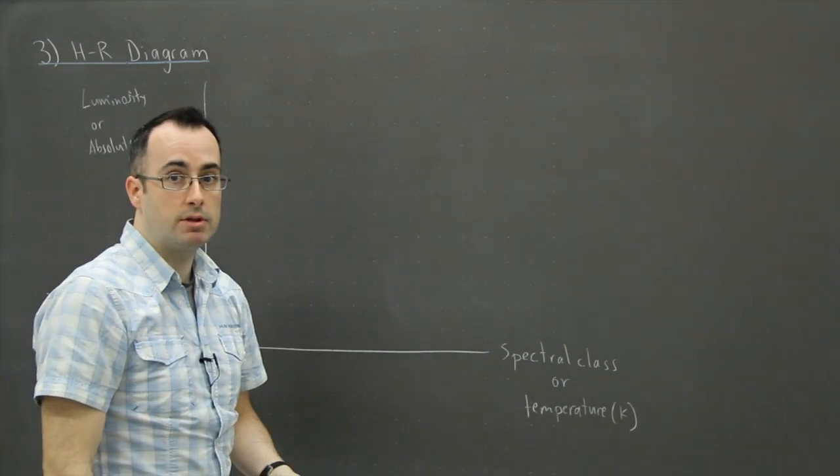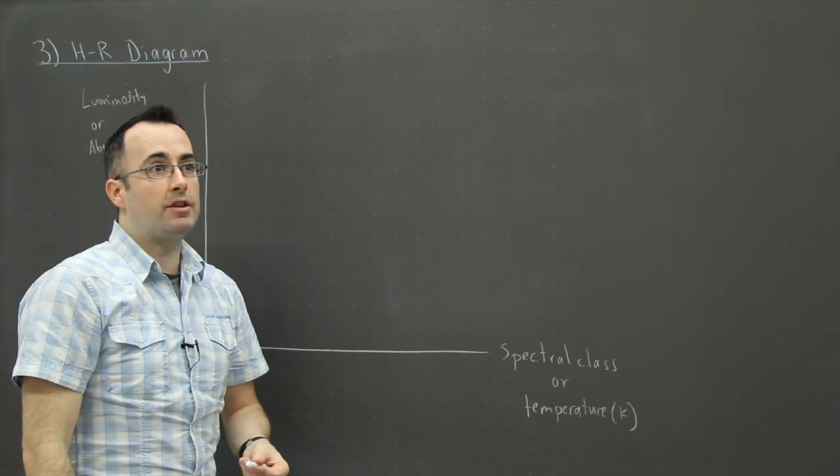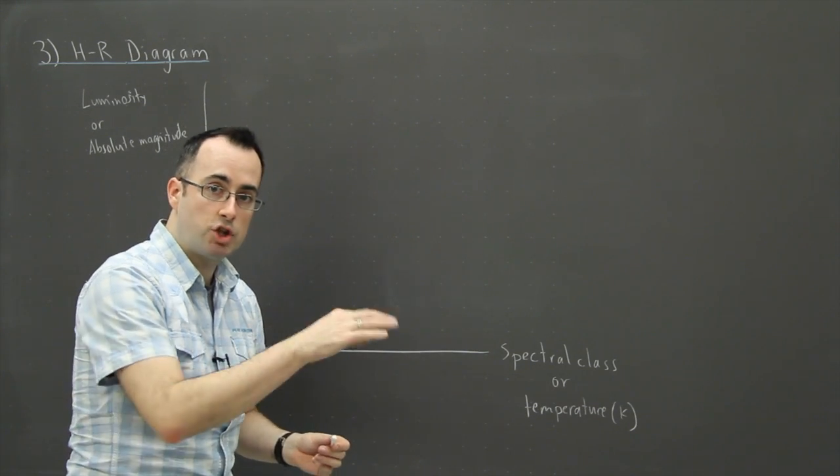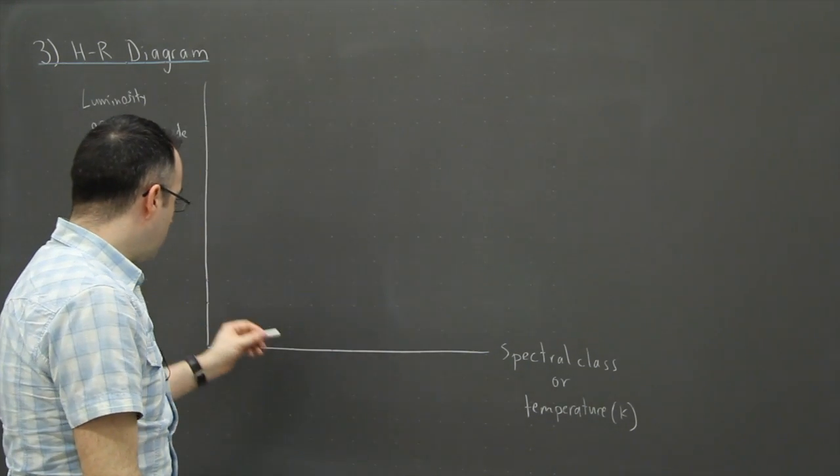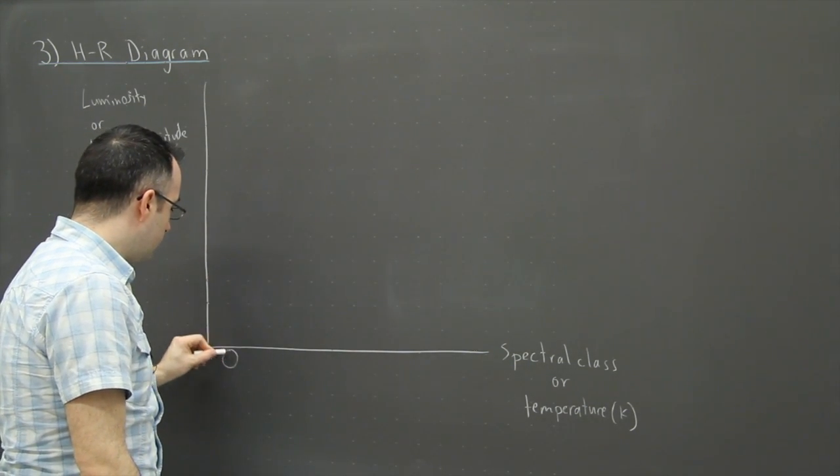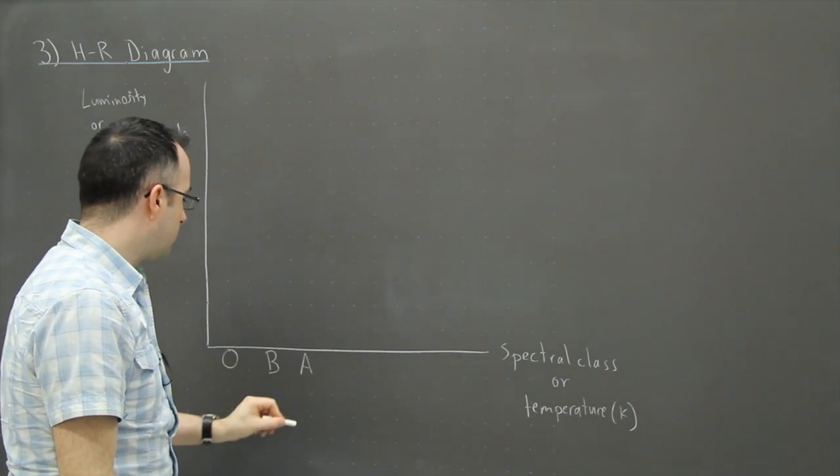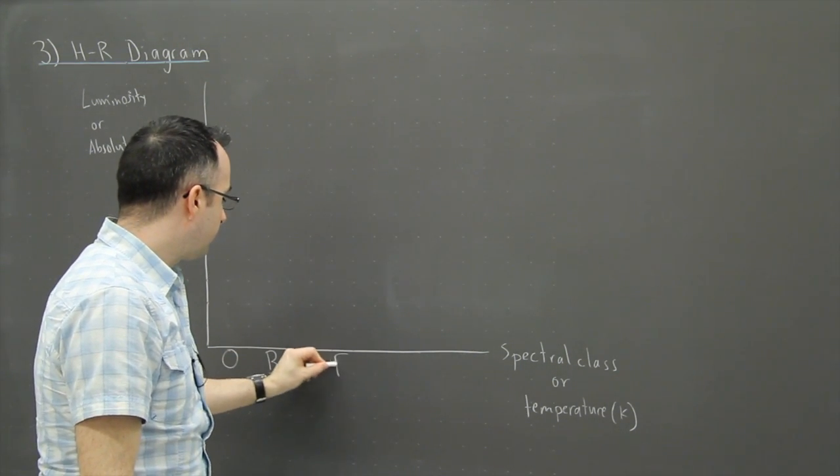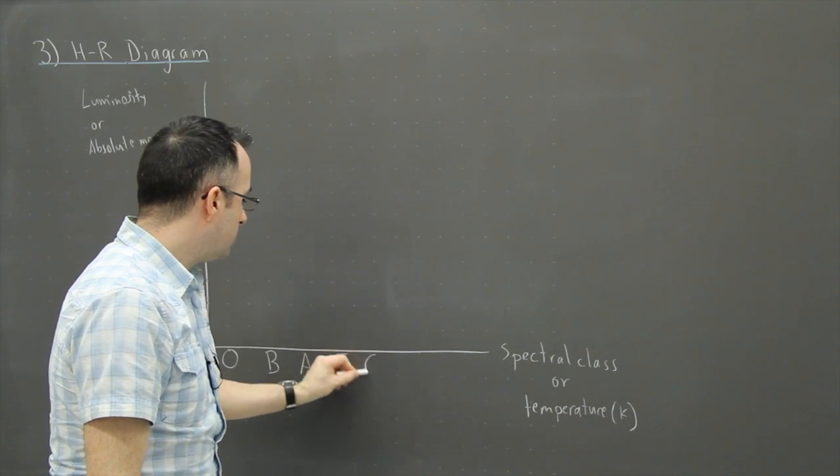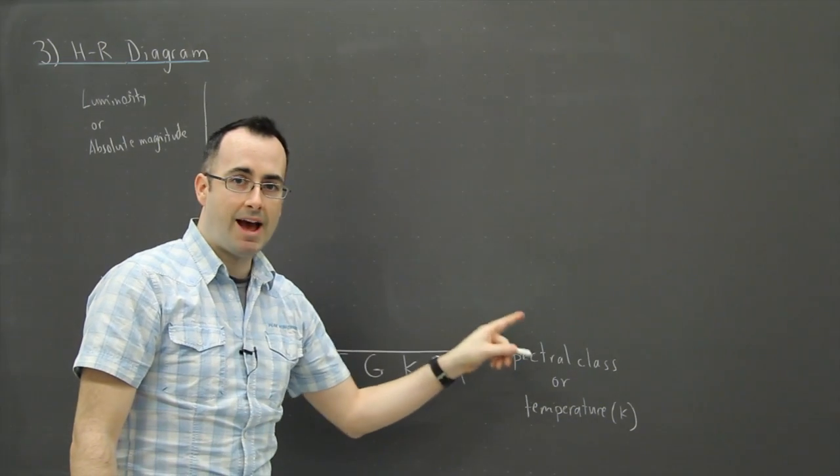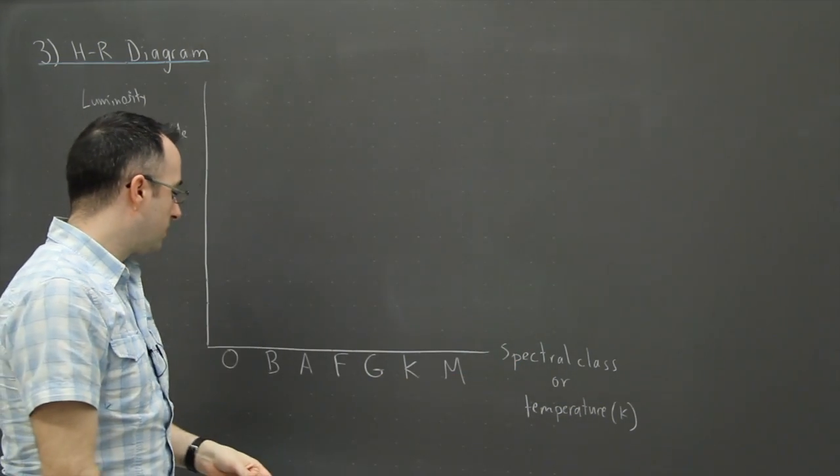So when I say spectral class, this is again another weird historical astronomy thing, but they have different classes of stars. And so, for example, the ones over here, they're called O stars, and then there's B stars, and then there's A stars, and then there's F, then there's G, then there's K, and there's M. There's even some other kinds that they've added, but it's not so important.